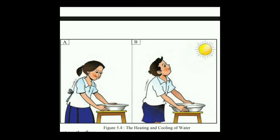Again, do this activity at 7 in the evening — that is, walk barefooted inside the house and feel the temperature of the water kept inside, and walk barefooted outside at 7 o'clock and feel the temperature of the water in the pot kept outside. Discuss all the observations you have noted in the class.